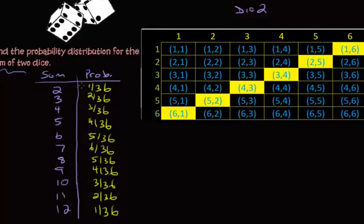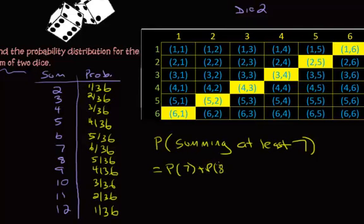Now that you have the probability distribution table created, we can do some follow-up questions such as, what's the probability of summing at least 7? So that would mean, what's the probability of getting a 7, plus the probability of getting an 8, 9, the probability of 10, 11, and 12. And that's going to equal 21 out of 36.